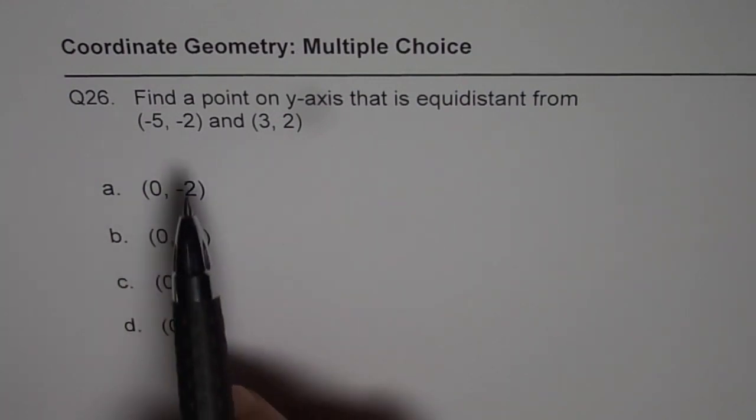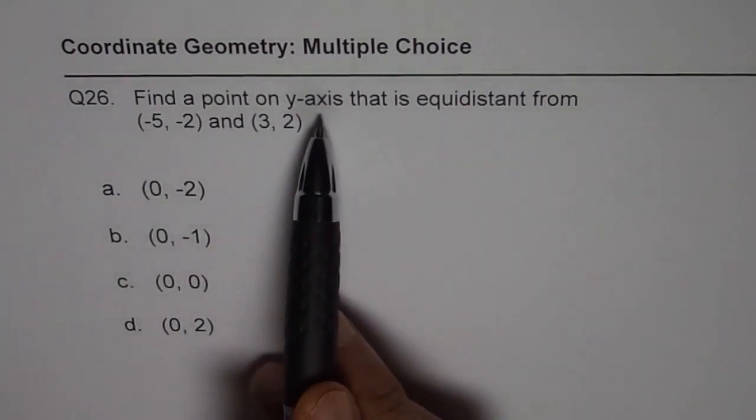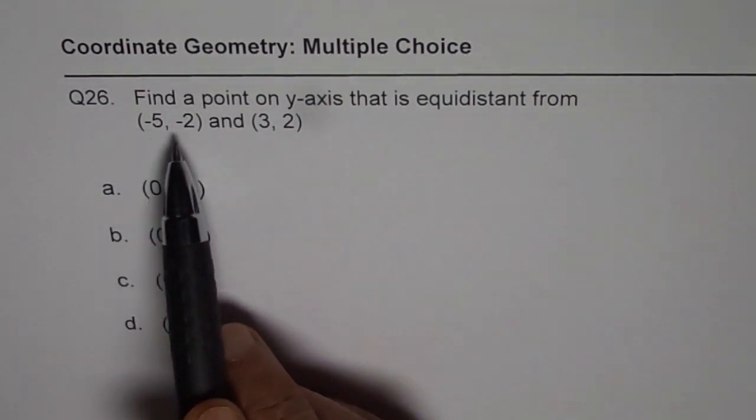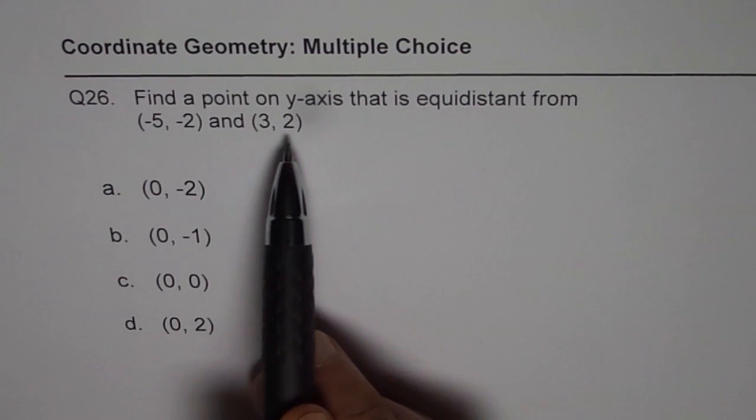I am Anil Kumar and here is an excellent question. Multiple choice coordinate geometry, grade 10. The question is: find a point on y-axis that is equidistant from (-5, -2) and (3, 2). You are given four different choices. I'd like you to pause the video and solve the question. Then look into my suggestion.